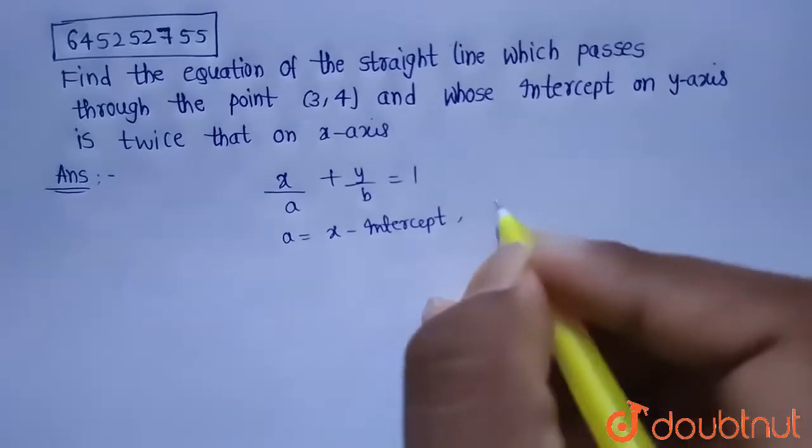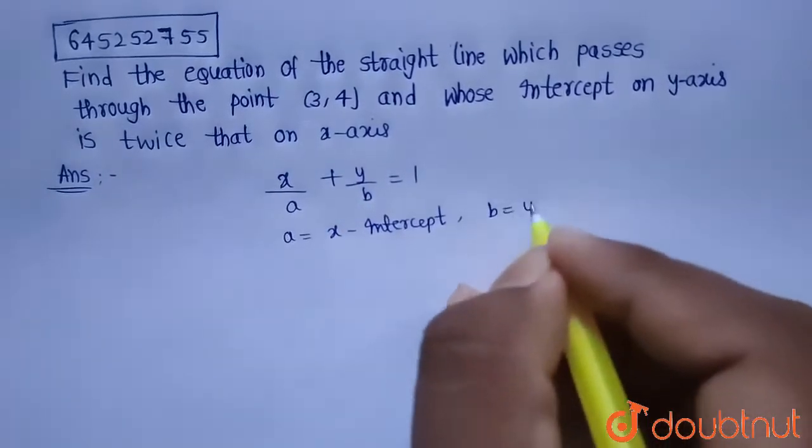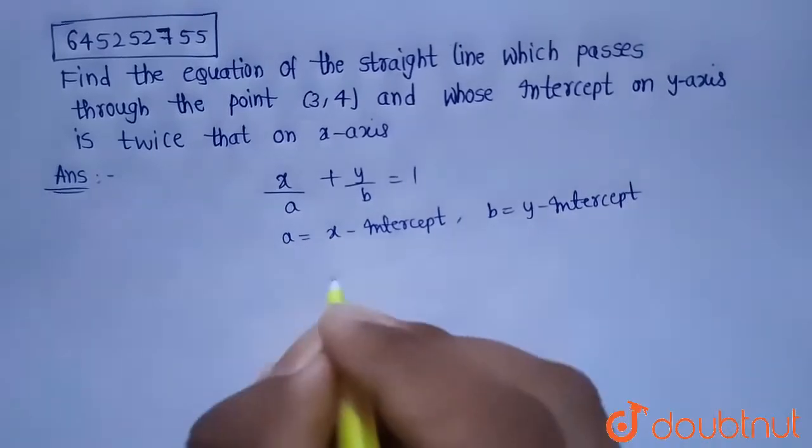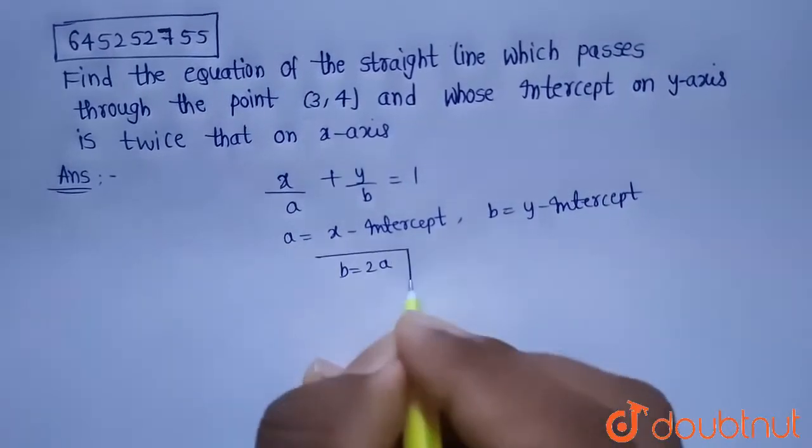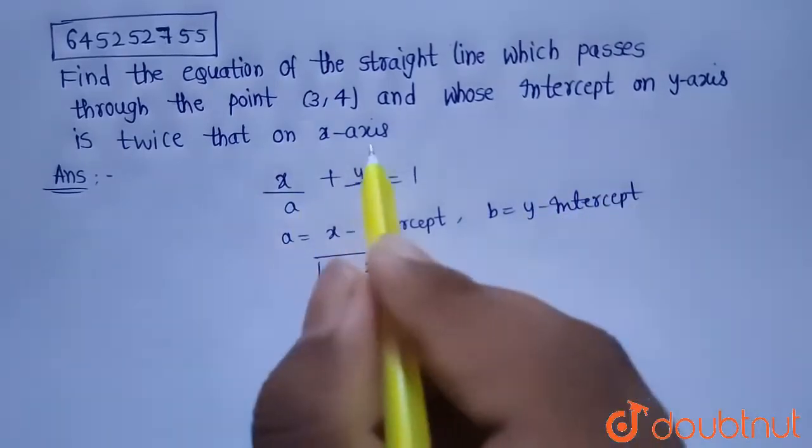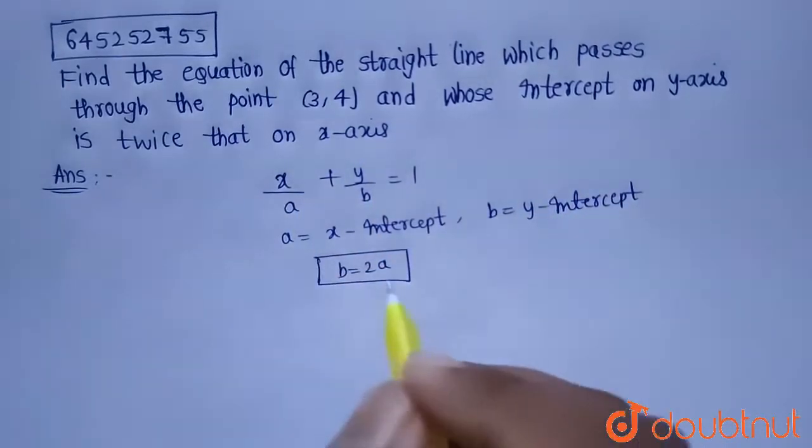Now, given y-intercept is twice the x-intercept, so that is b equals 2a, because b is the y-intercept and a is the x-intercept. Given y-intercept is twice that on x-axis, so b should be equals to 2a.